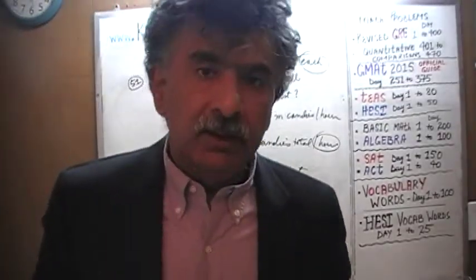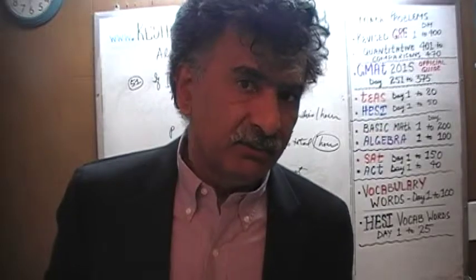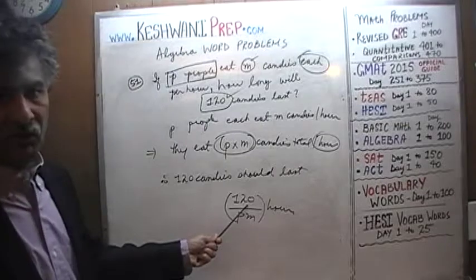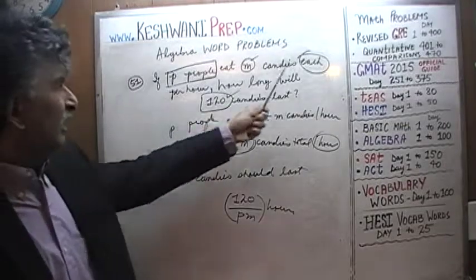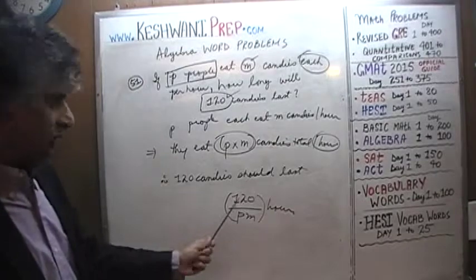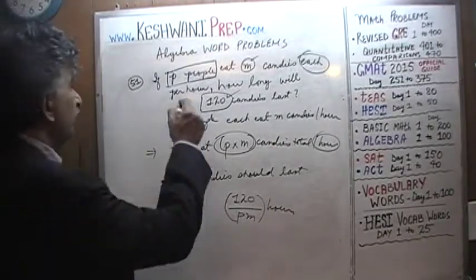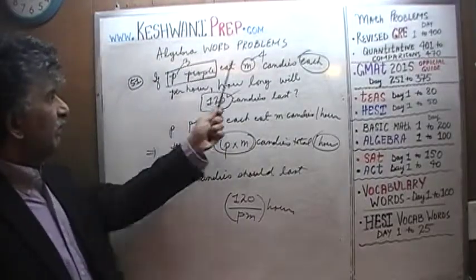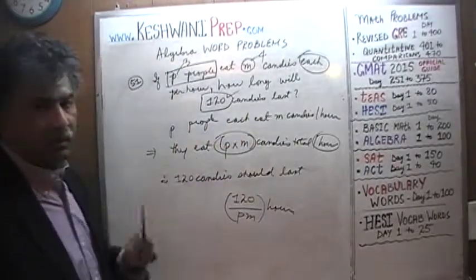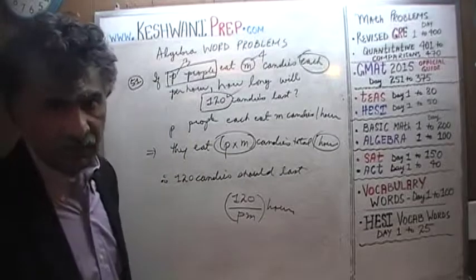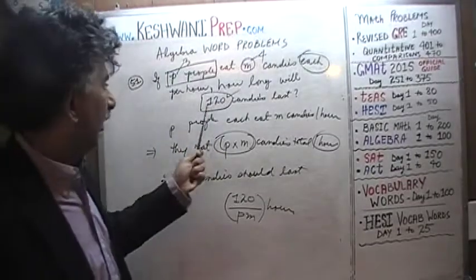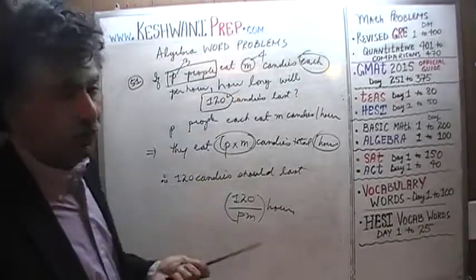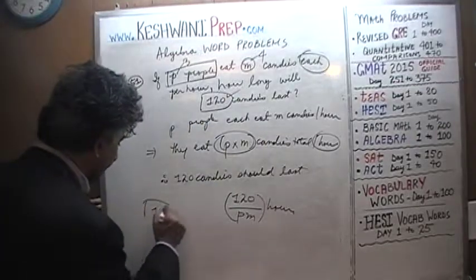When you are doing that, it's always a good idea to plug in smart numbers — numbers that make our work, our life easier. We have 120 here, so let's plug in numbers such that it comes out to be 12, because it's a nice multiple of 12. We are going to have 3 people, 3 people each eating 4 candies. If we have 3 people each eating 4 candies per hour, then every hour they are going to eat 12 candies. With P equal to 3 and M equal to 4, we should get an answer of 10.